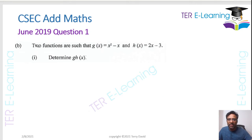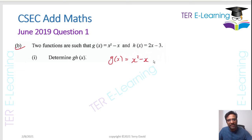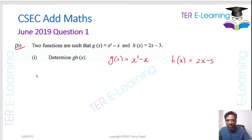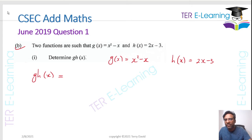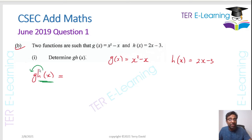Now in part b they've given us two functions: g(x) = x² − x and h(x) = 2x − 3. The question wants us to find g(h(x)). This is a composite function. What we need to do is take whatever h(x) is and plug it into g — that's how composite functions work.